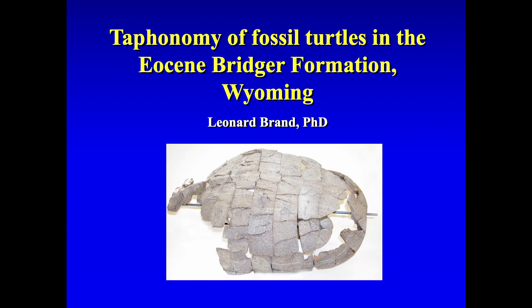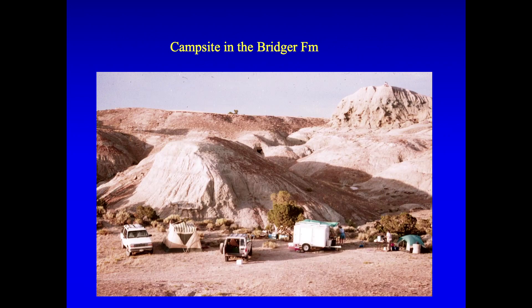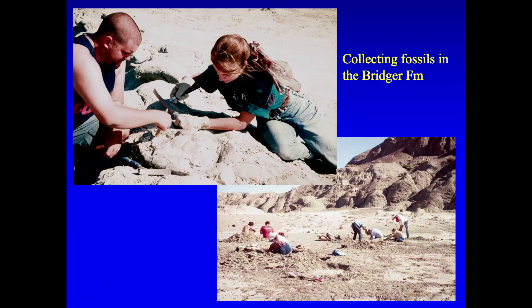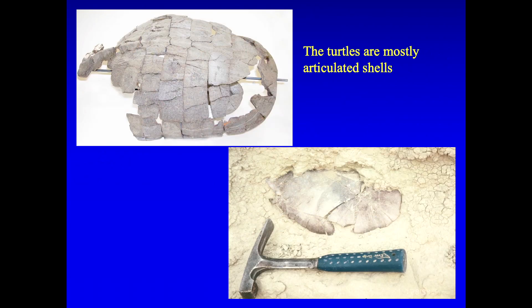I've got a few minutes for this. Taphonomy of fossil turtles in the Eocene Bridger Formation in Wyoming. There's a formation in Wyoming that has thousands of fossil turtles. This is the formation, and this is our camp. And if you dig, the two students are excavating a large turtle, and you dig in the sand and you get lots of fossils, especially turtles, lots of turtles. And they're all, the shells are all complete. They have no heads and very few limb bones.